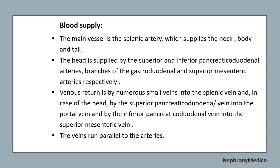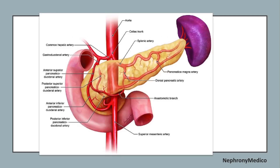Venous drainage is by small numerous veins into the splenic vein. From the head, it is drained by the superior pancreaticoduodenal vein into the portal vein, and by the inferior pancreaticoduodenal vein into the superior mesenteric vein. These veins run parallel to the arteries. This picture shows the arterial supply of the pancreas.